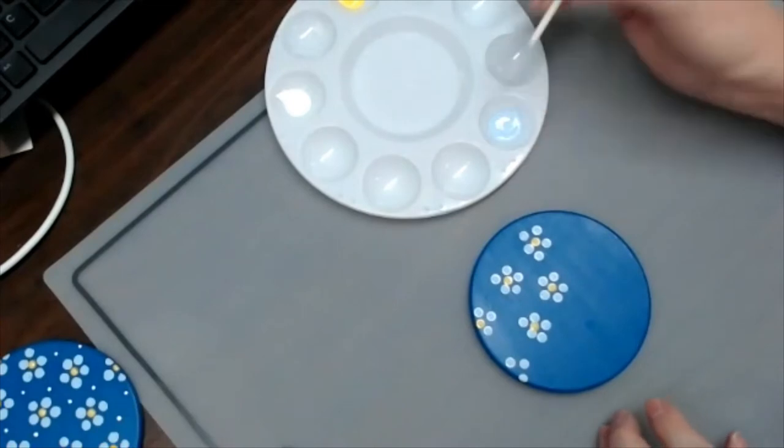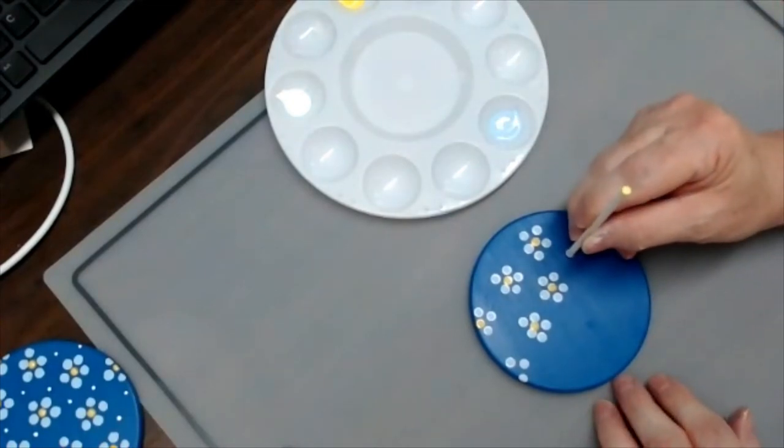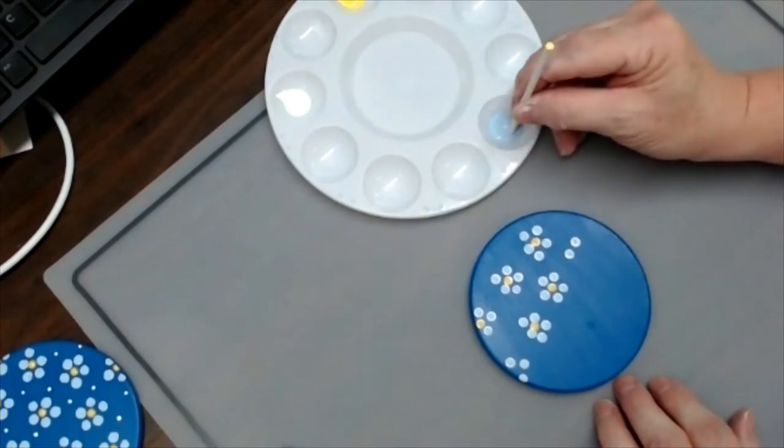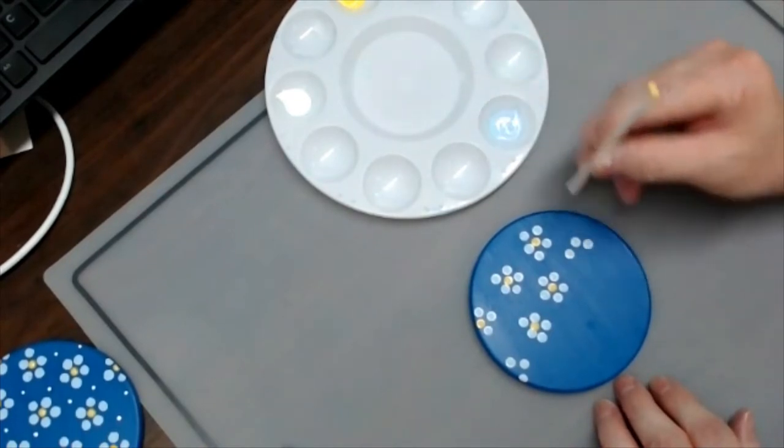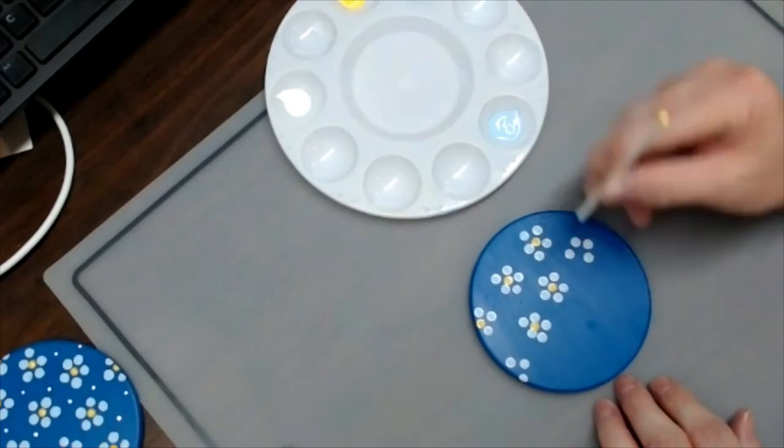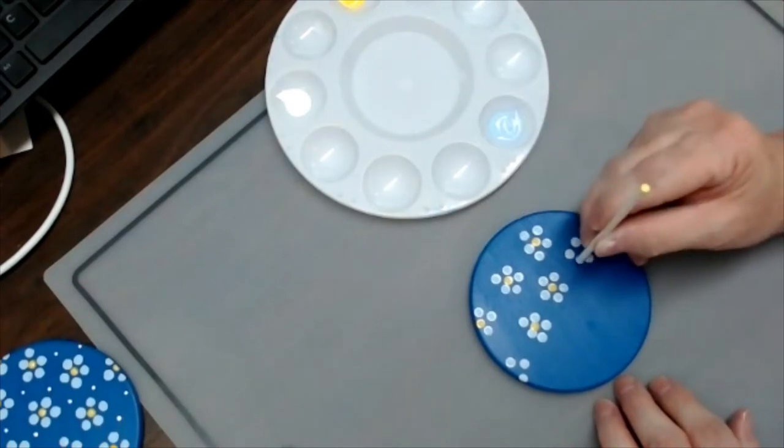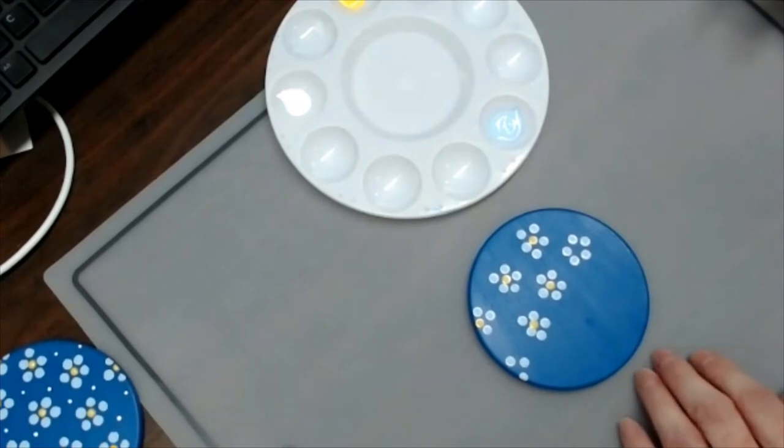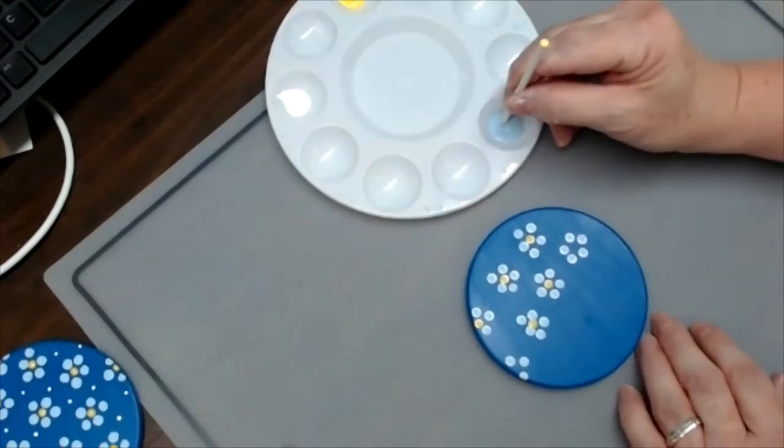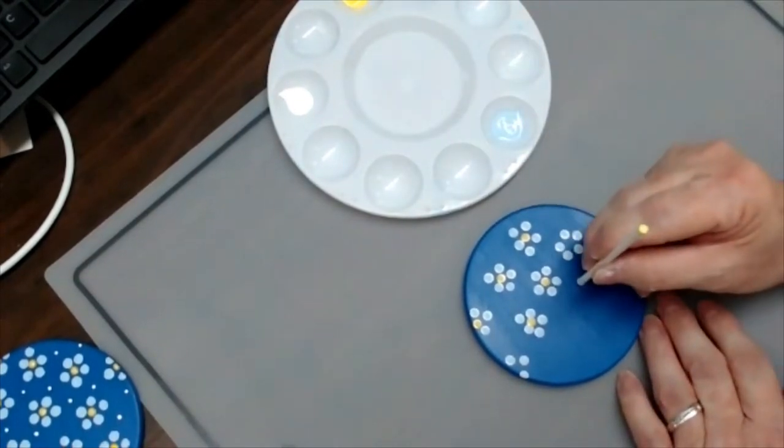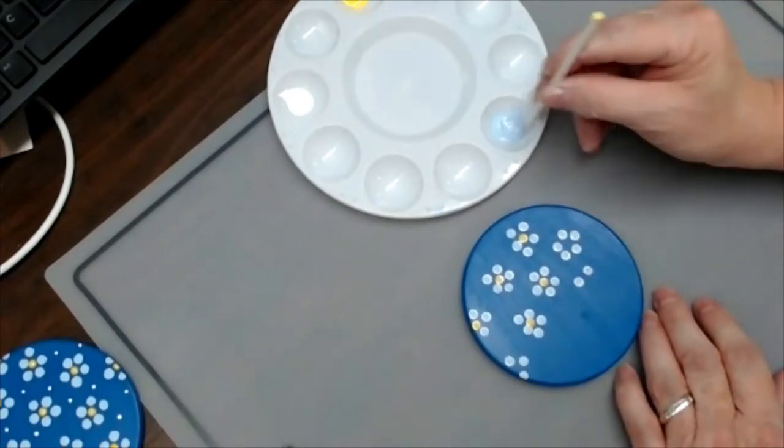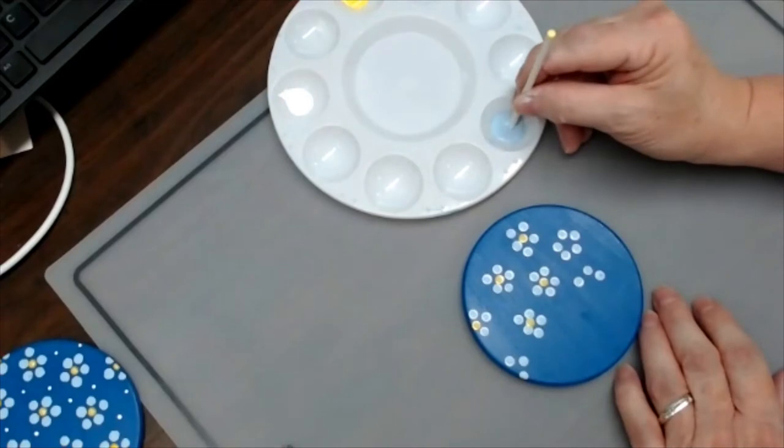So again, we're going to come in since we're doing a five petal flower. Going to come in one, two, three, four, five, and there you go. And afterwards we're going to add our yellow in order to complete the petal. So I like to do the middle of the surface first and then fill in along the edges if I feel there's too much space.